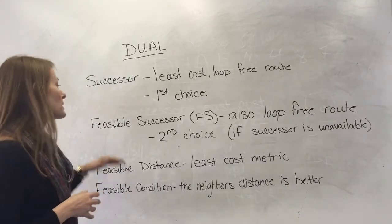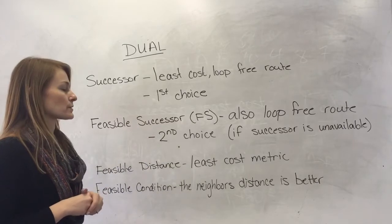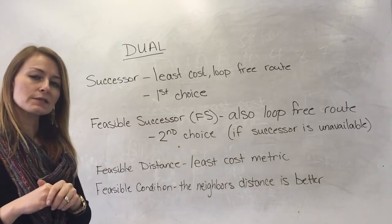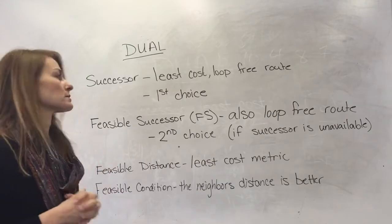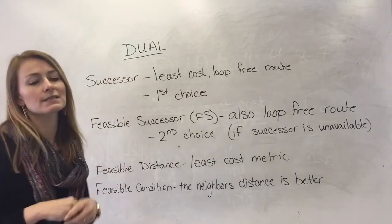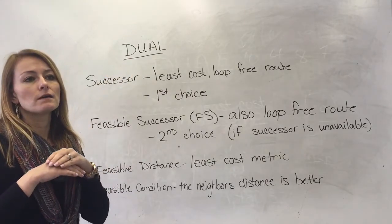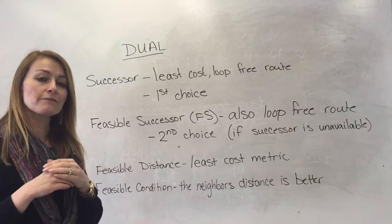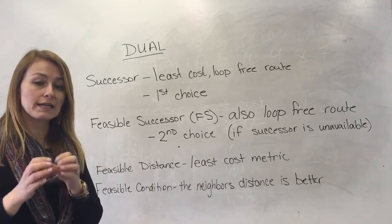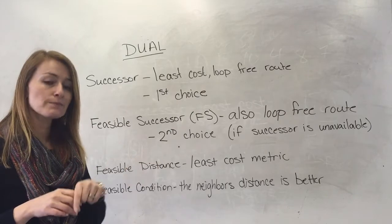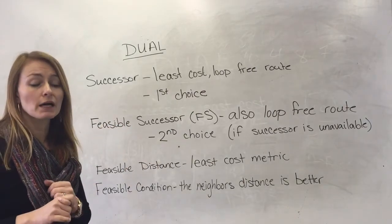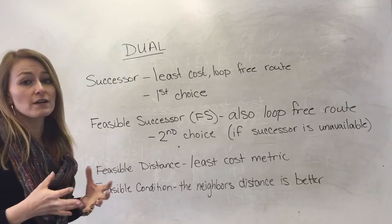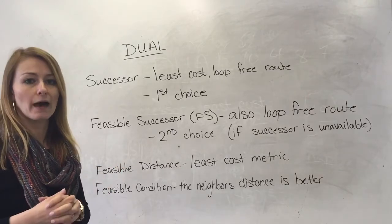Another term is feasible successor. The feasible successor is the runner-up or the vice president. If by chance the successor is not available, if the router cannot get to the successor, then its second choice is the feasible successor. It's also got to be a loop-free path, but you can think of it as a loop-free backup path.